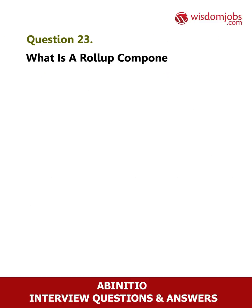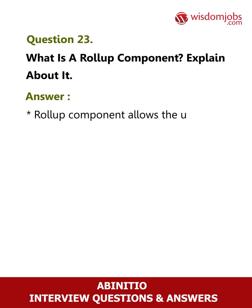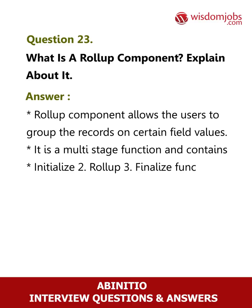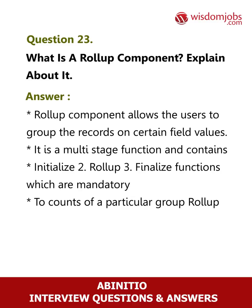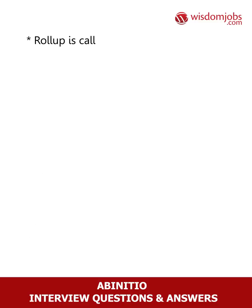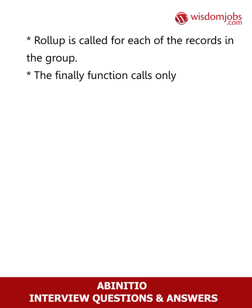Question 23: What is a rollup component? Answer: The rollup component allows users to group records on certain field values. It is a multi-stage function and contains three mandatory functions: initialize, rollup, and finalize. To count a particular group, rollup needs a temporary variable. The initialize function is invoked first for each group. Rollup is called for each record in the group. The finalize function is called only once at the end of the last rollup call.